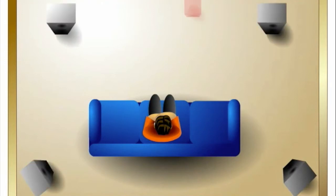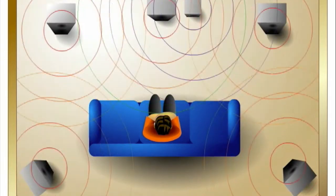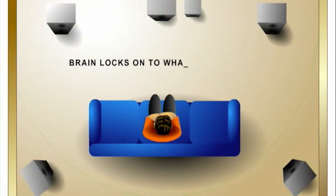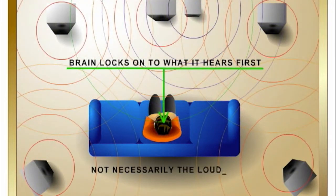Surround sound manipulates the way the brain perceives direction, distance, and space. The brain locks on to what it hears first, not necessarily the loudest.